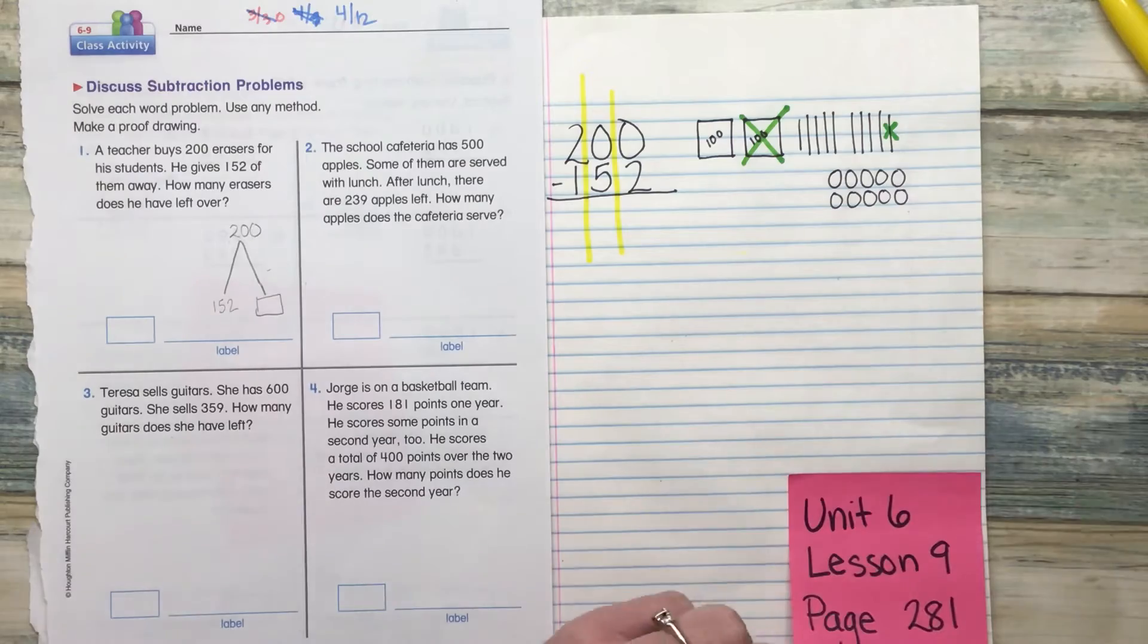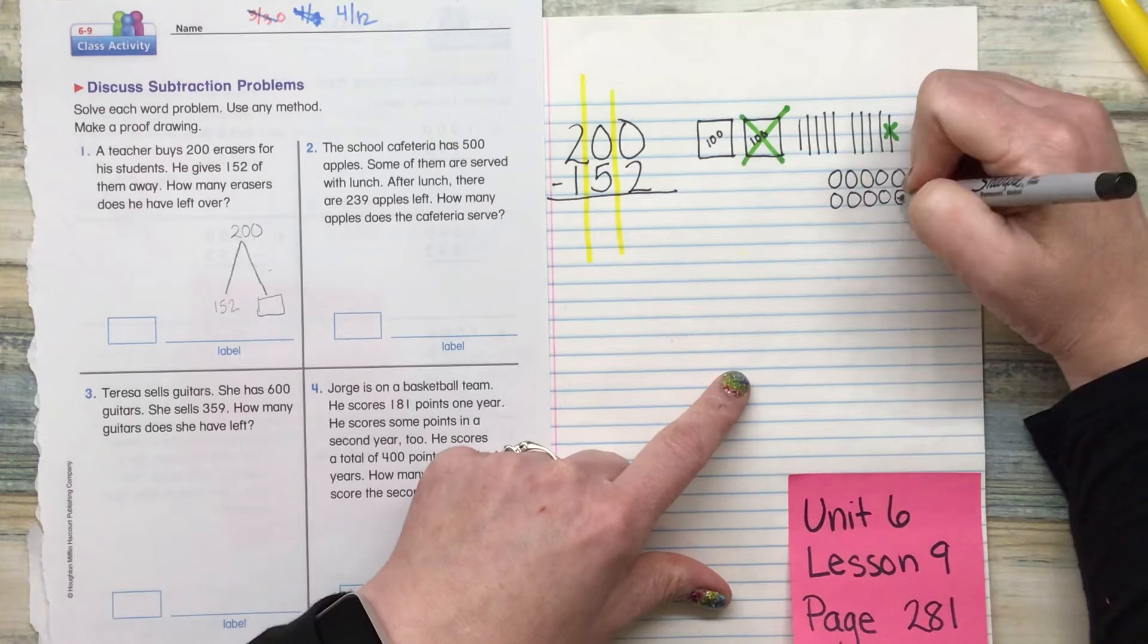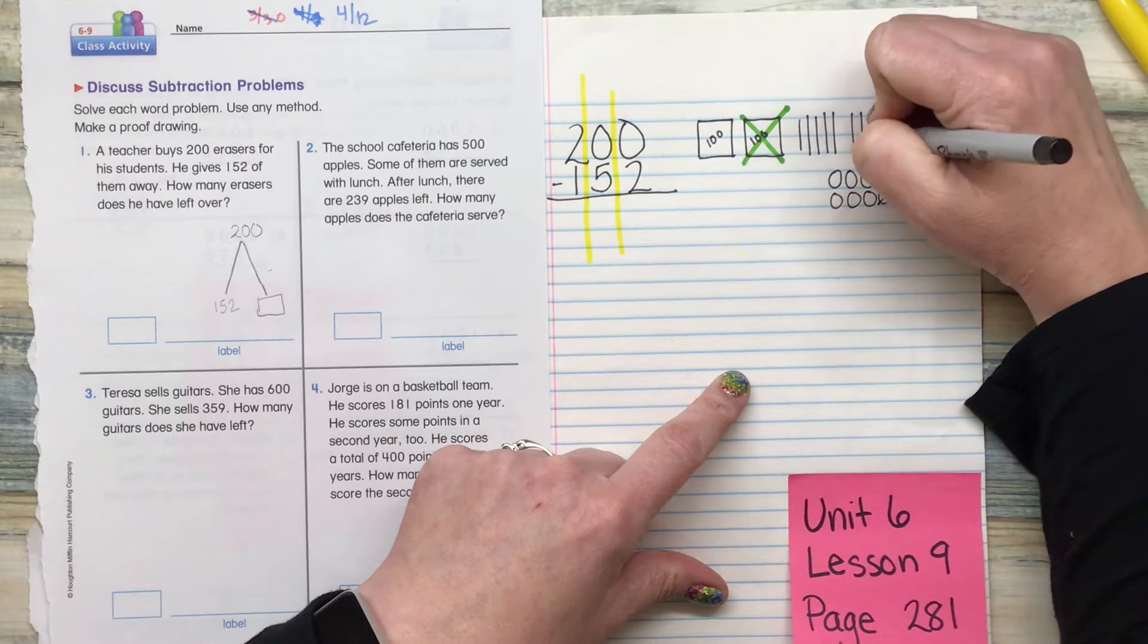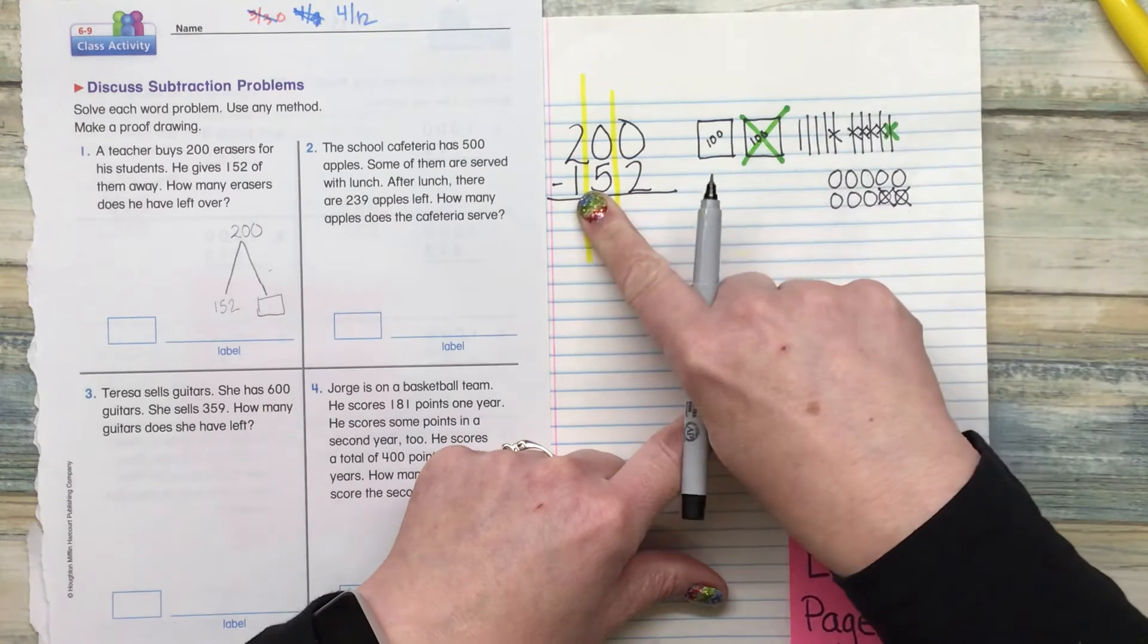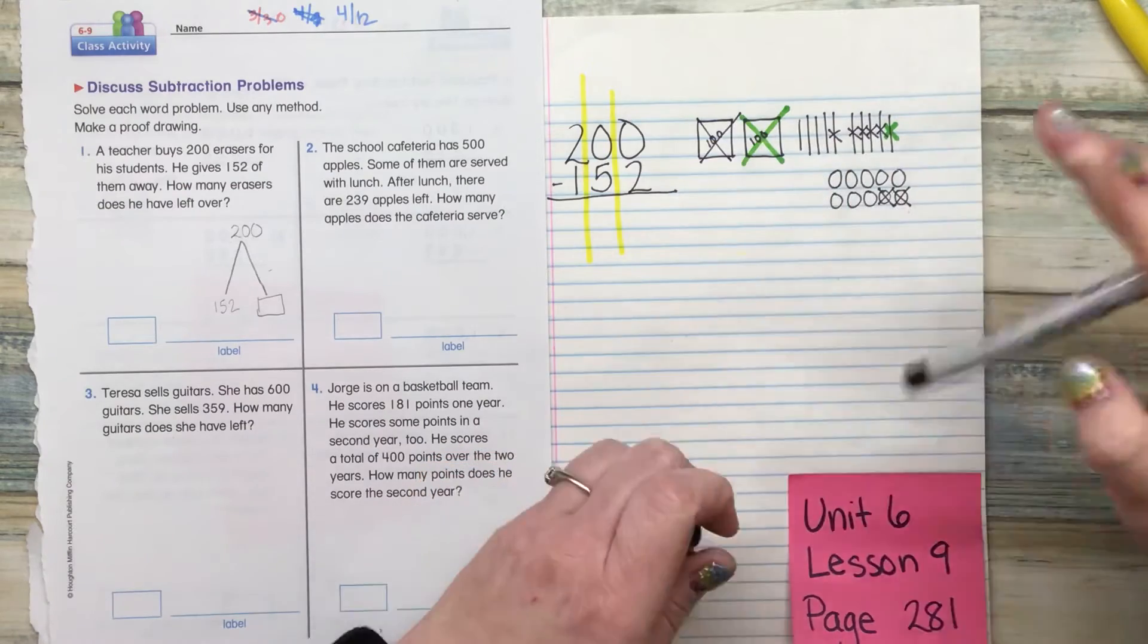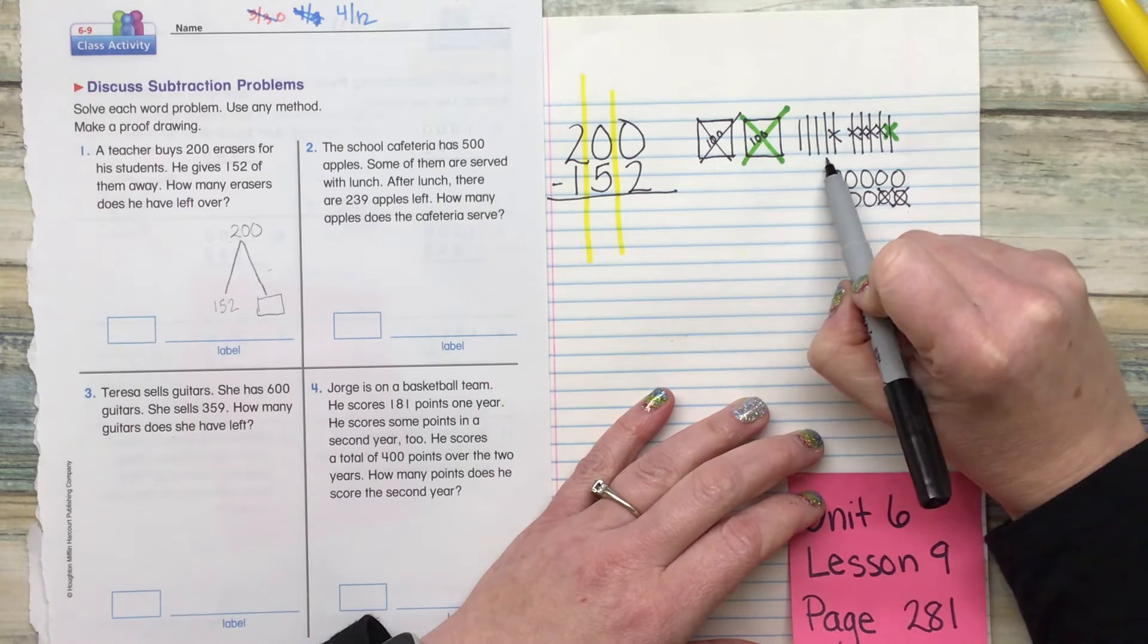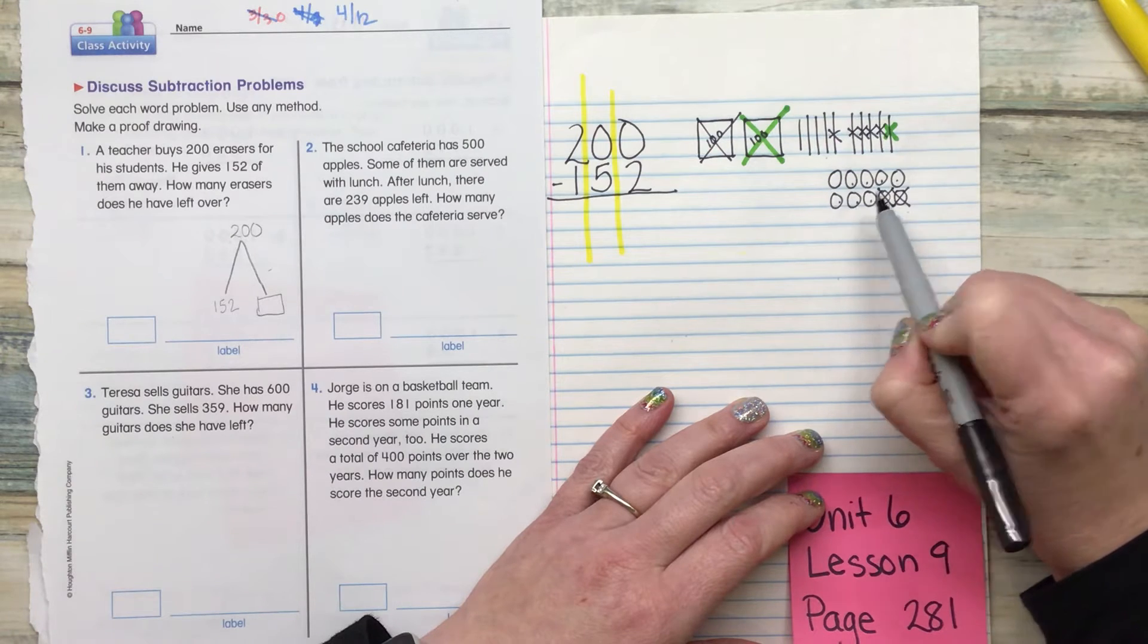So now that I have my picture drawn, I can go ahead and do my X-ing out. So I'm going to X out two from my ones. And I'm going to X out five from my tens. I'm going to X out one from my hundreds. So now I don't have any hundreds left. So if I count them up, my number is going to be smaller than 100. 10, 20, 30, 40, 41, 42, 43, 44, 45, 46, 47, 48.